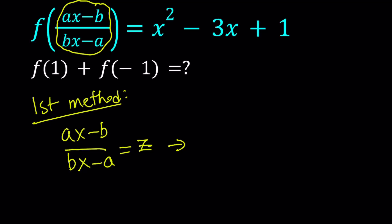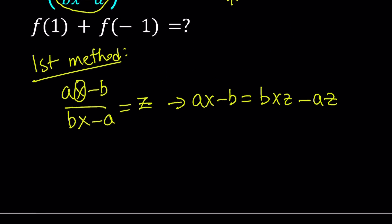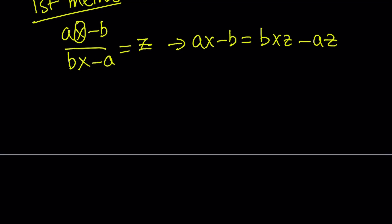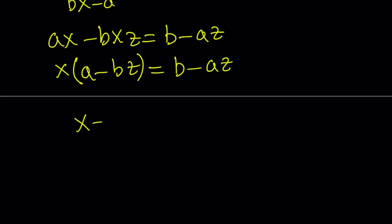Let's go ahead and cross multiply. We get ax minus b equals bxz minus az. My goal is to solve for x and be able to write x in terms of z. Let's bring the bxz here and put the b on the right hand side, then factor out x: a minus bz equals b minus az. Then divide both sides by a minus bz to find x.